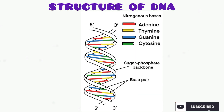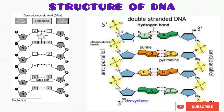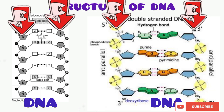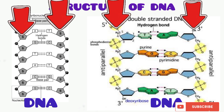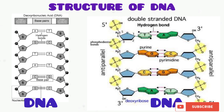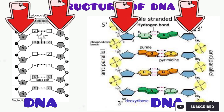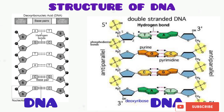Now take a look at this twisted ladder-like structure. Let's unwind it — you get a structure just like a ladder. The DNA is made up of two strands, and each of these strands is made up of many nucleotides. This is why we say DNA is made up of two strands of polynucleotides.